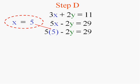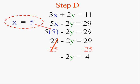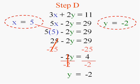So my next step is to take that 5 and plug it into either of the two equations. We'll put it into this one because it looks easier. And now all I have is the y which I can solve for. I'll subtract 25 from both sides and divide by negative two and I'll have y is negative 2.